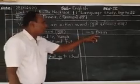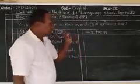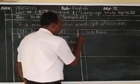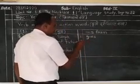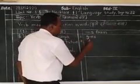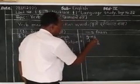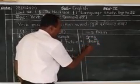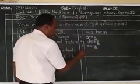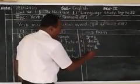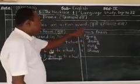Now the second form of a verb — the S form. Look at these examples: give becomes gives, draw becomes draws, eat becomes eats, show becomes shows. This is the S form.